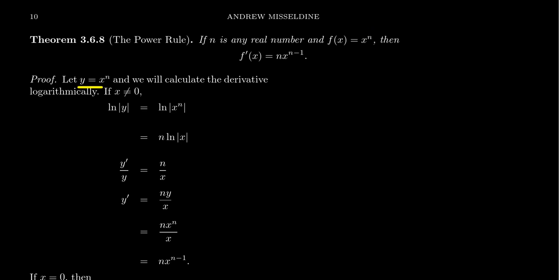So suppose we have our power function y equals x to the n. Well, we're going to take the natural log of both sides, but the natural log of 0 is undefined, so we are going to assume that x is not 0 for this argument. We'll treat 0 separately in just a moment.